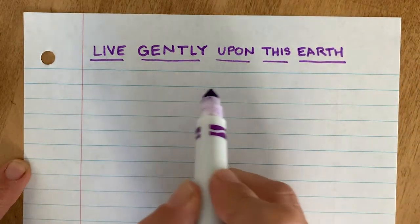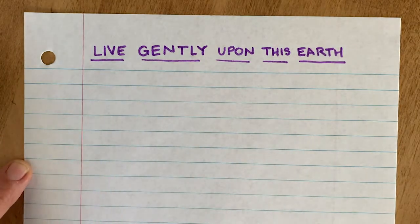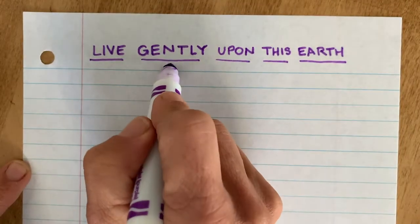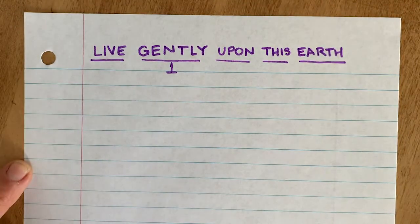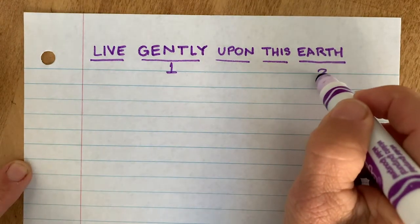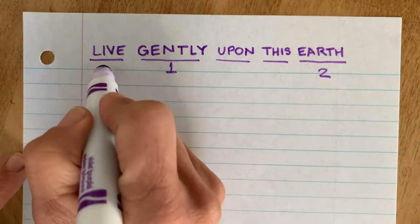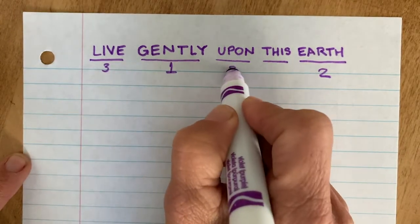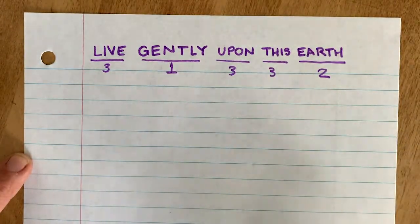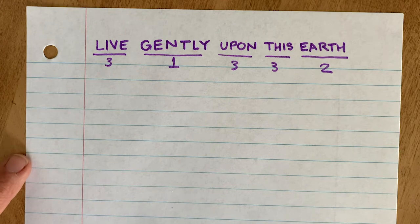I'm going to use live gently upon this earth. And for me, I'm going to say gently is my most important word. And then earth is going to be my next most important word. And then live, upon, and this are all going to be at the third level.